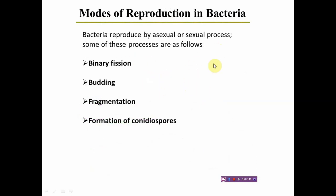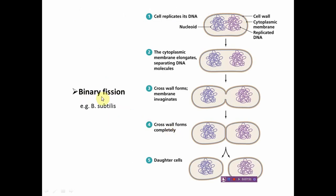Bacteria mainly multiply by these mechanisms: binary fission, budding, fragmentation, and formation of reproductive spores. In binary fission, from the central mesosome there is invagination of the membrane, followed by formation of a DNA filament. After invagination, there is equal distribution of DNA and cytoplasm, resulting in two equal daughter cells similar in size to the mother cell.